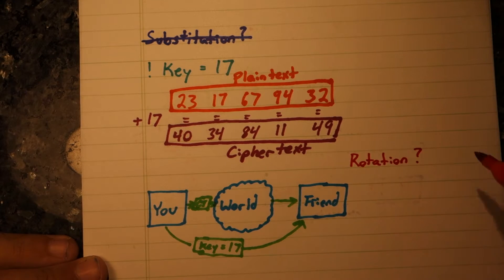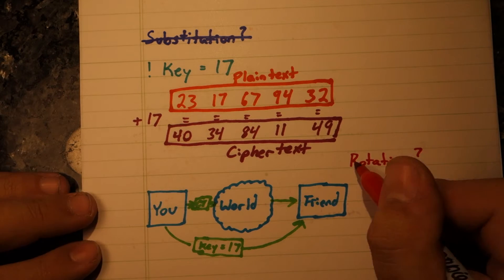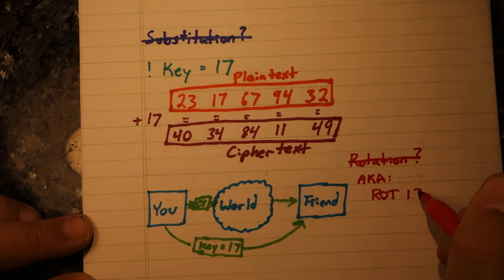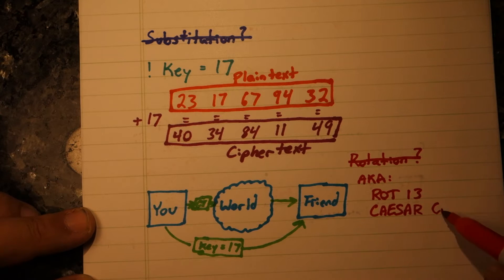Note that this is also known as a rotational cipher, or in other words, ROT13, or the Caesar cipher.